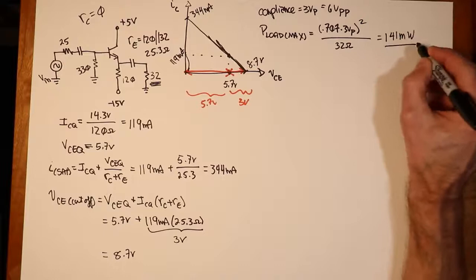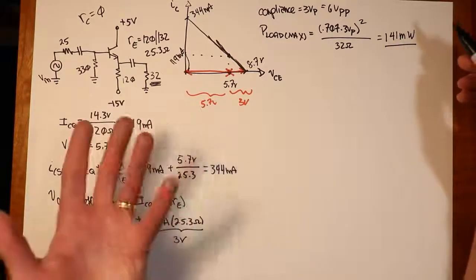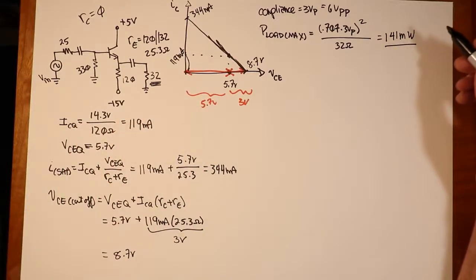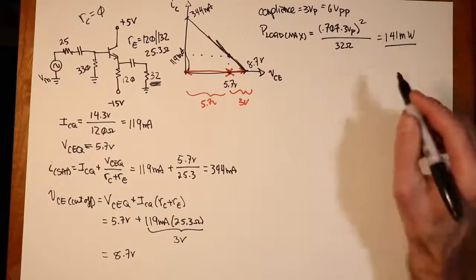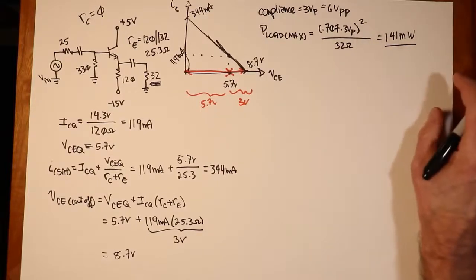So in the AC case, they're basically in parallel, so they have the same voltage. So when we grind through this, we wind up with 141 milliwatts. Not a lot of power, but actually, that's a sufficient amount of power for something like a pair of headphones. It's not going to make your home stereo or car stereo very loud, but for headphones, that'll be plenty of power.